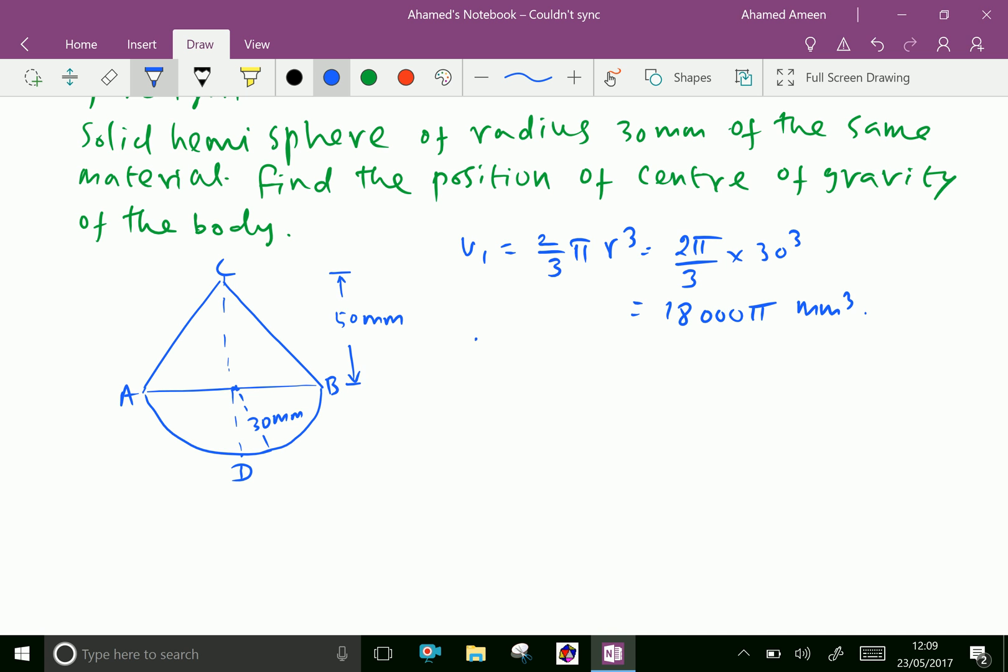Y1 is the position of center of gravity of hemisphere from the bottom, from D, which is 5r over 8, which equals 5 into r is 30 over 8. By calculation it is 18.75 mm.